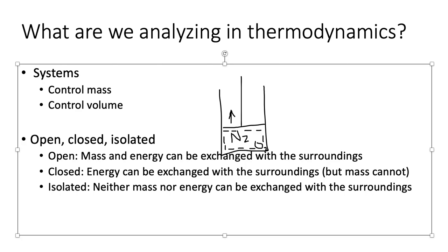These terms are just ways to describe the system — the key is knowing how to define it. Let's apply these terms to the systems we've defined for the piston-cylinder apparatus. For the control mass — those specific molecules of nitrogen and oxygen in the piston to start — that is a closed system. Mass cannot be exchanged because we've picked the specific molecules we're analyzing. Energy can be exchanged; for example, if we put a flame on the bottom of the apparatus and heat it up, energy clearly passes to the surroundings.